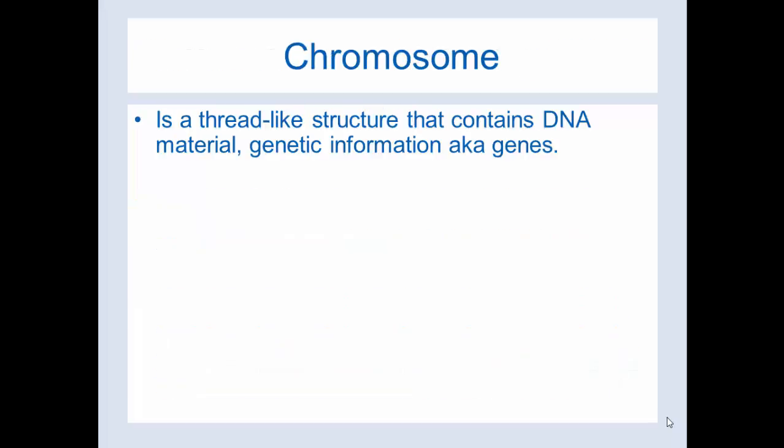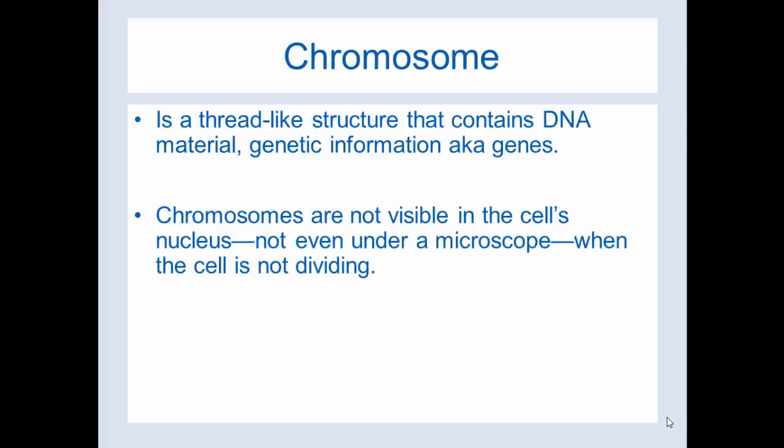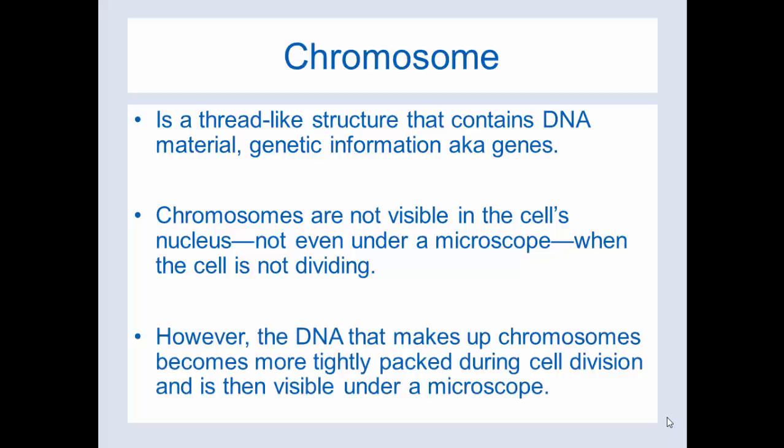A little bit about chromosomes: a chromosome is a thread-like structure that contains DNA material — basically genetic information, also known as genes. Chromosomes are not visible in the cell's nucleus, not even under a microscope, when the cell is not dividing. However, the DNA that makes up chromosomes becomes more tightly packed during cell division, and that's when chromosomes become visible under the microscope. That's how they were originally studied, way back in the day. But now we have this fantastic technology: CMA.